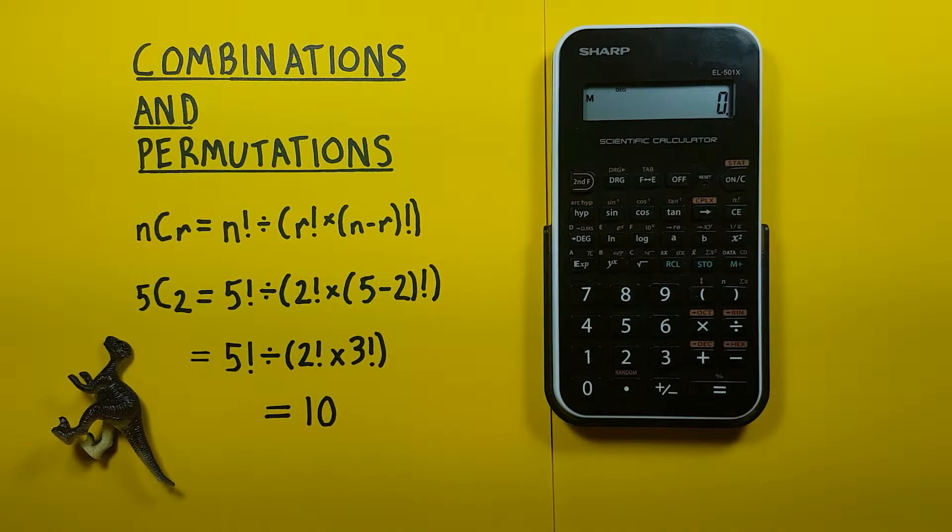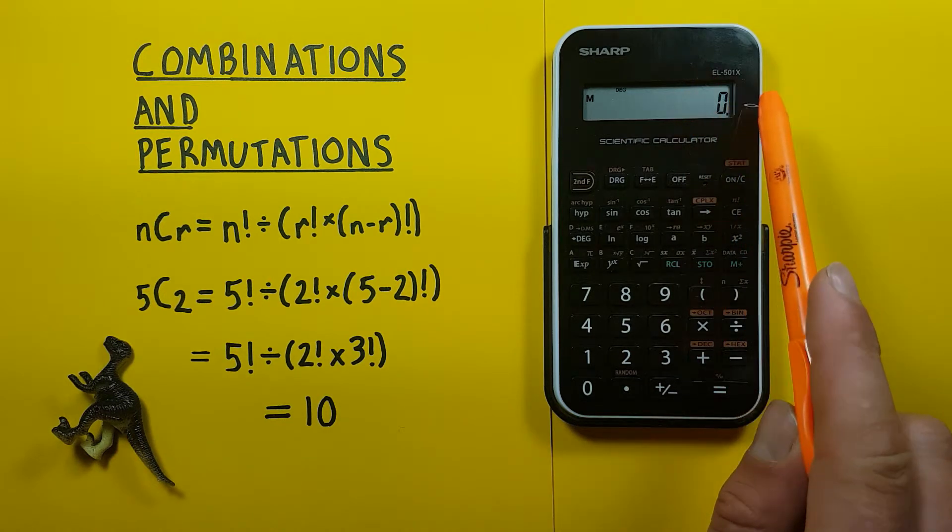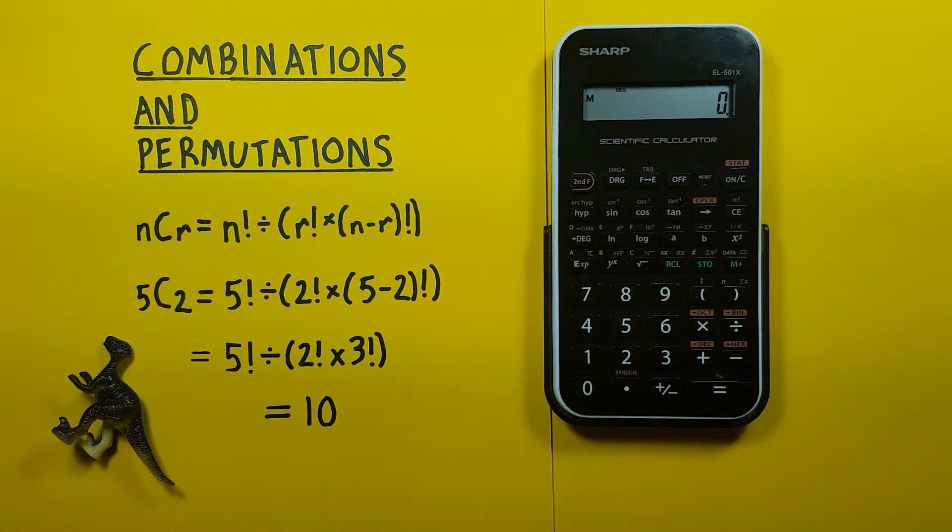Hello and welcome to HP Calcs. I'm Rick and today we're going to have a quick look at how to solve combinations and permutations on a calculator that doesn't have a specific key for this function. For this example we'll be using the Sharp 501X calculator because it doesn't have an NCR or NPR key.